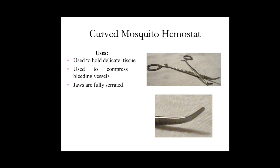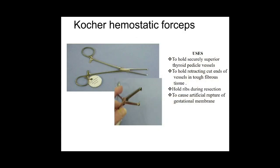The next one is the Kocher hemostatic forceps. It is used to securely hold the superior thyroid pedicle vessels or pedicle tissues — the vessels which are attached to prominent bony areas or organs. During thyroid surgeries, blood vessels attached to the thyroid are separated from the thyroid gland using Kocher hemostatic forceps. It is also used to hold the ribs during resection and to cause the artificial rupture of the gestational membrane.